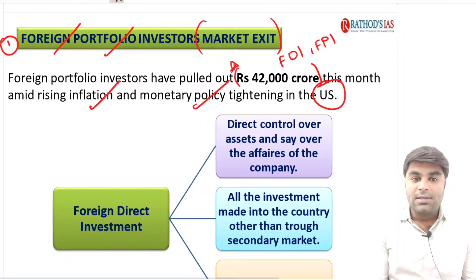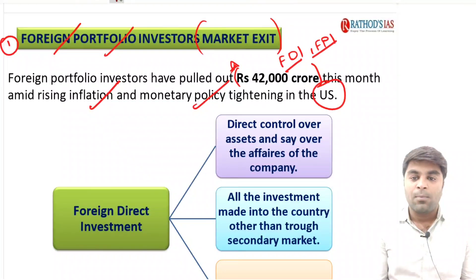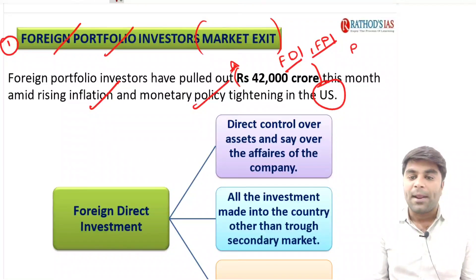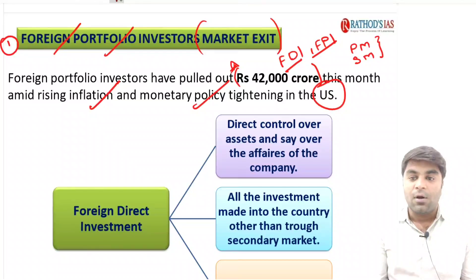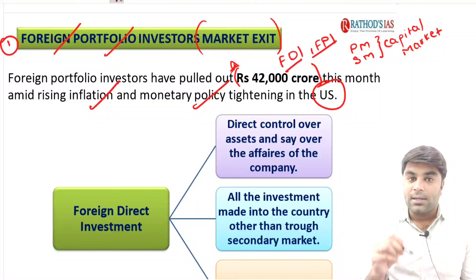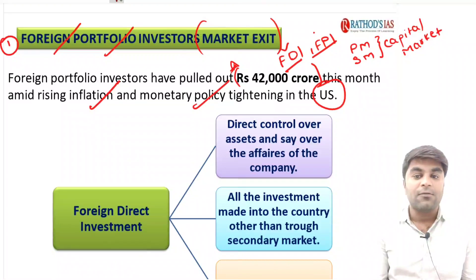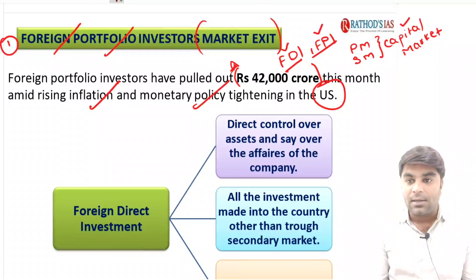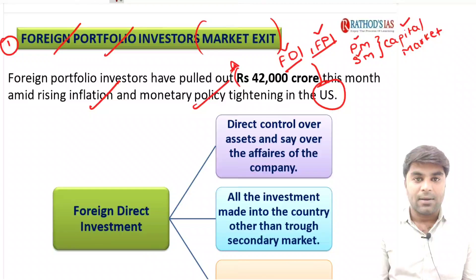In order to understand foreign direct investments and foreign portfolio investments, first we should be aware of what is the primary market and what is the secondary market. These two are the compositions of the capital market. Before we understand about FDI and FPI, we should be aware about the capital market, which is composed of the primary market and secondary market.